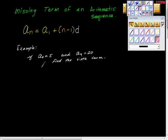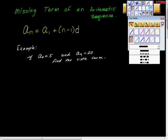So here's the example. It says if the fourth term is equal to 5 and the ninth term is equal to 20, find the sixth term. It's not too bad. We just have to use this information.